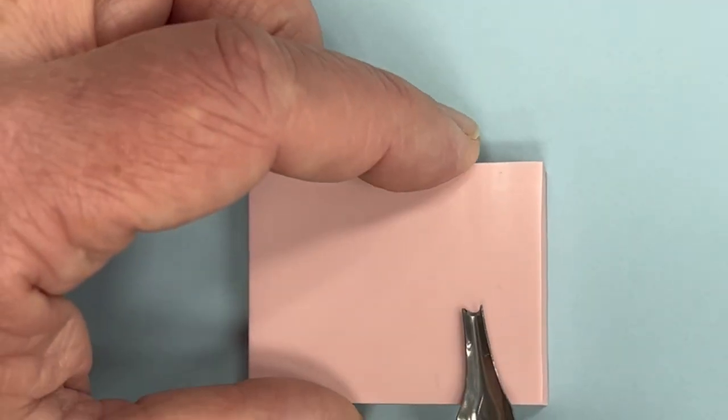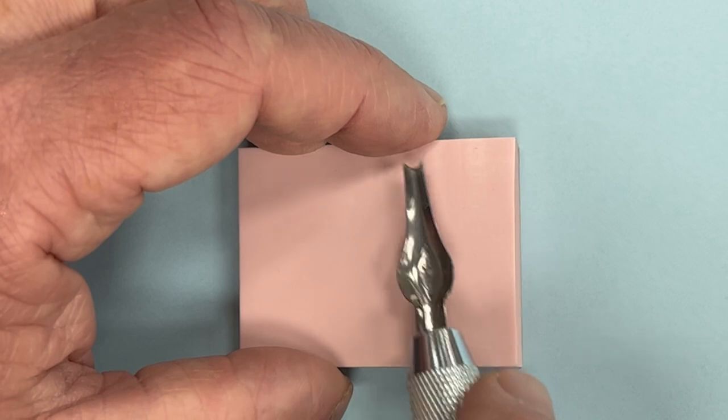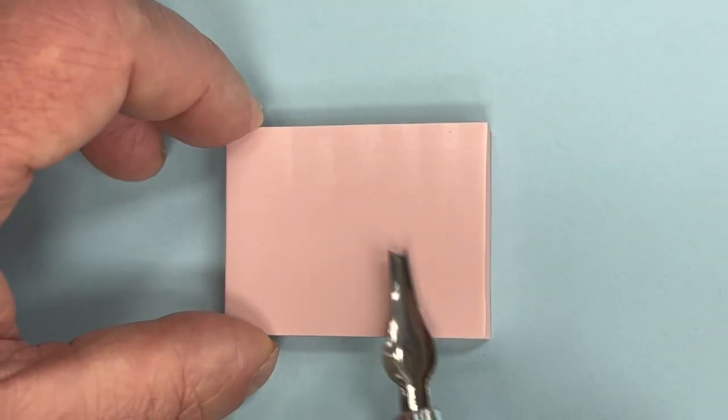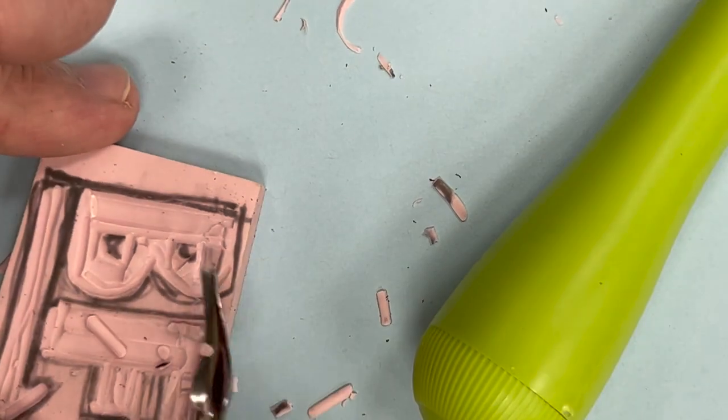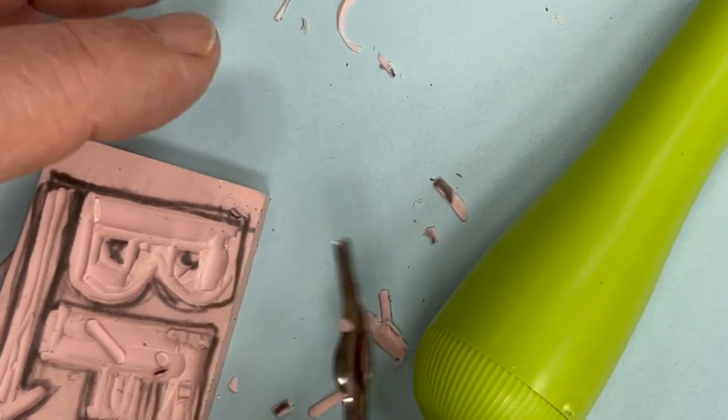Always think to yourself, where will the blade go if my hand slips? If the answer is your finger, then turn the block or do something to move your finger out of the way and stay safe.